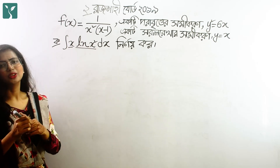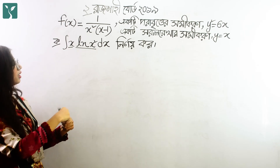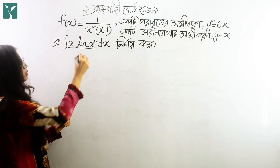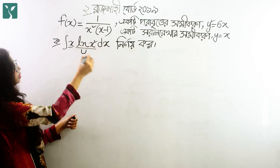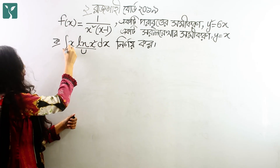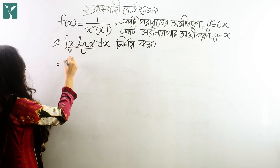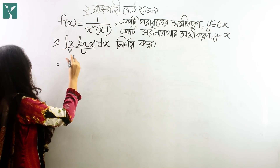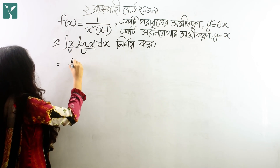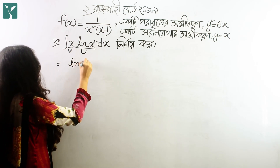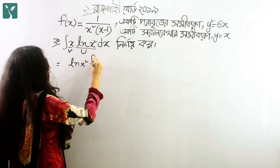So actually, u is ln(x²) and v is x. We have set up the integration by parts. What we need to do is take u, that is ln(x²), into our integration of v dx.